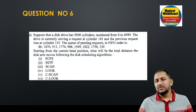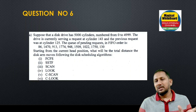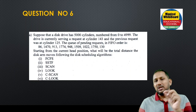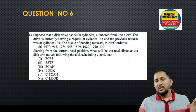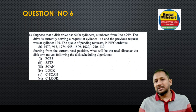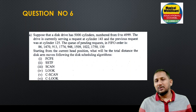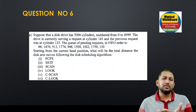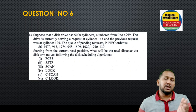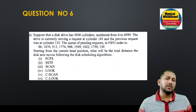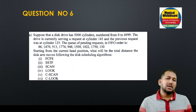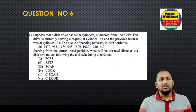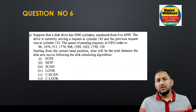In our E2 channel's Operating System playlist, this mathematical problem is available. Next mathematical problem: disk scheduling — 5000 cylinders given, range 0–4999, currently at head position 143, previously at 125. All requests are given. Calculate the total head movement distance and apply the disk scheduling algorithm.